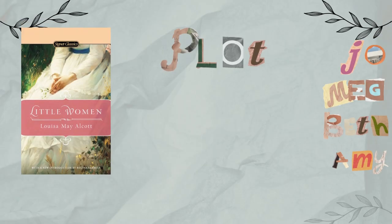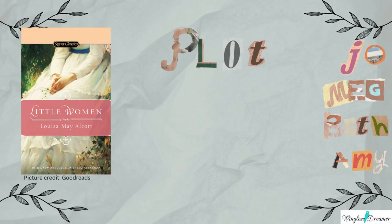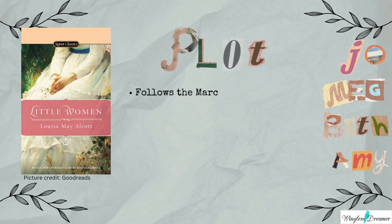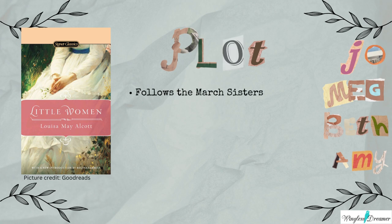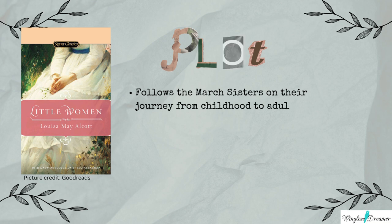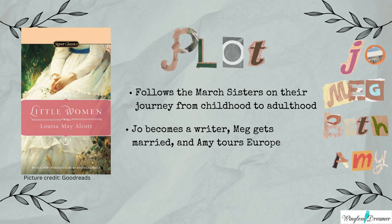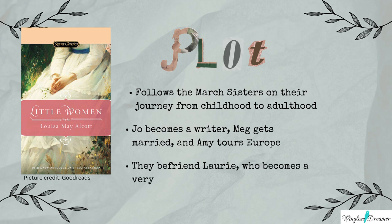The novel follows the March sisters — Meg, Jo, Beth and Amy — on their journey from being little women to becoming mature and gaining satisfaction in their own lives. They befriend Laurie, who eventually ends up being a very important part of their lives. The novel is very well-known and a pretty good first read for people trying to get into classics.